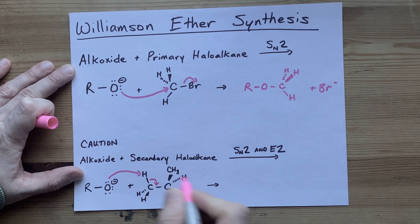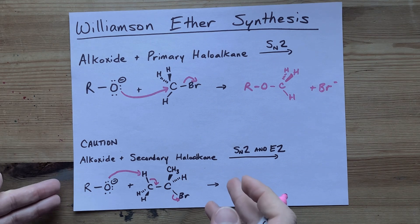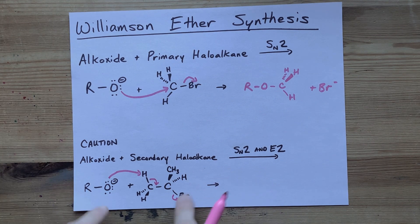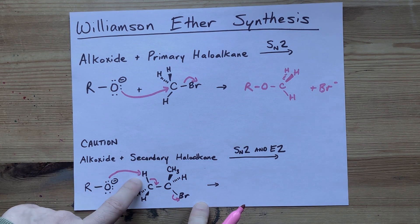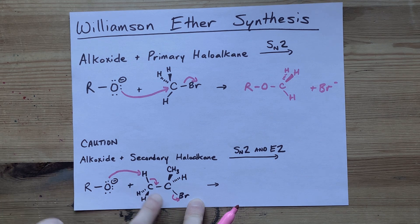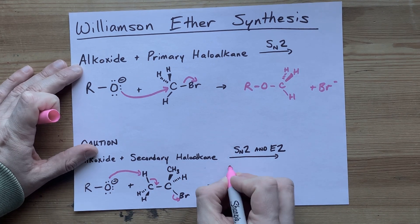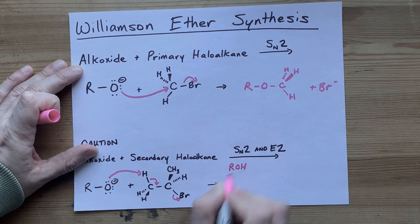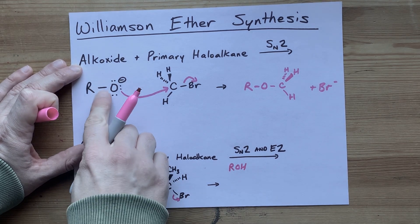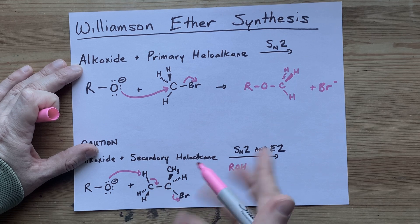And the bromide then falls off, which you can kind of see is like it's kind of similar. There's still an attack by the alkoxide. The bromide's still falling off, but you're forming an alkene here. You end up with ROH, which actually is probably how you created that in the first place. So why would you want to recreate it?